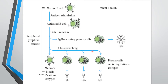Class switching takes place so the plasma cells can produce IgG, IgA, or IgM. Up to this point it is in the bone marrow, and once mature it goes and settles in the secondary lymphoid organs where all this activity takes place. There is continuous class switching taking place, resulting in IgG, IgA, and IgM production due to class switching.